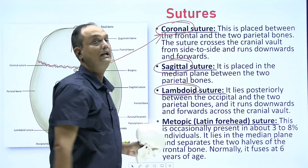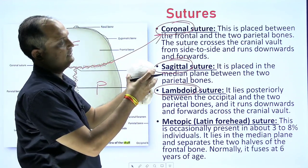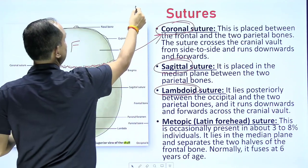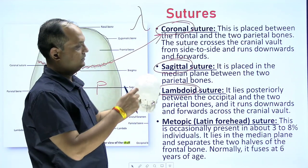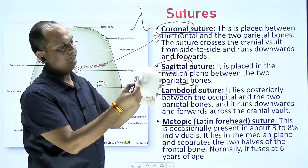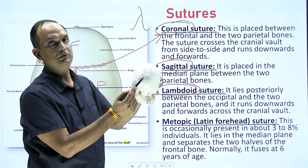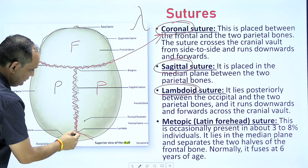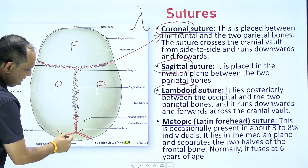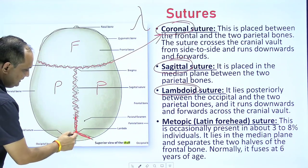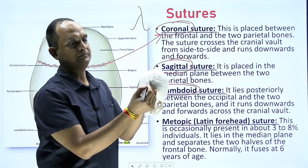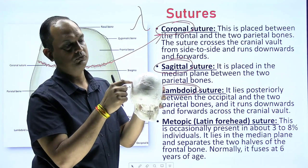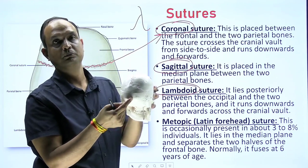The third is the lambdoid suture. When you see the posterior side, you will find the formation of a lambda shape. The lambdoid suture is present between the two parietal bones and the occipital bone, and it is lambda-shaped. This suture is the joint between the two parietal bones and the occipital bone posteriorly.